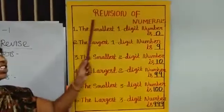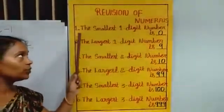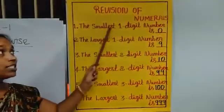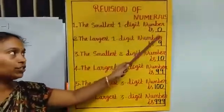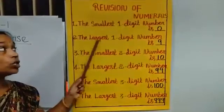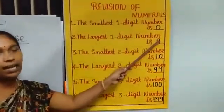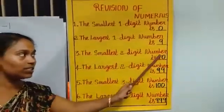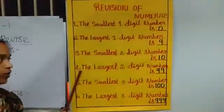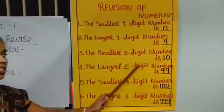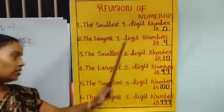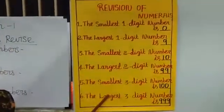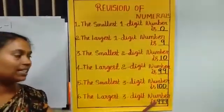The next one: revision of numerals. The smallest 1-digit number is 0. The largest 1-digit number is 9. The smallest 2-digit number is 10. The largest 2-digit number is 99. The largest 3-digit number is 999.